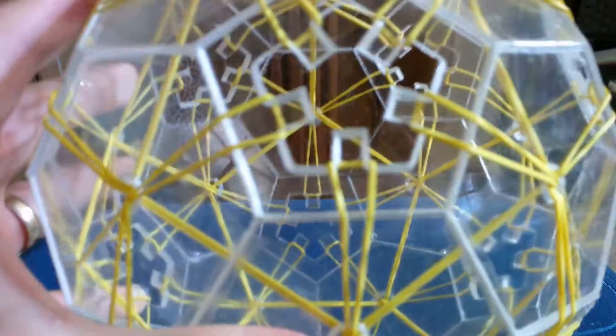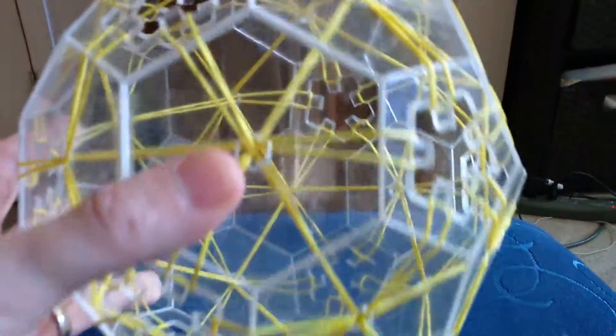And if you look into the interior, it's hard to see, but the interior forms a dodecahedron in the rubber bands, which is kind of interesting to see through the inside.